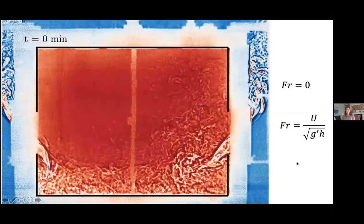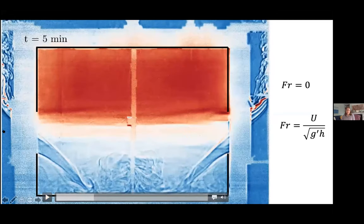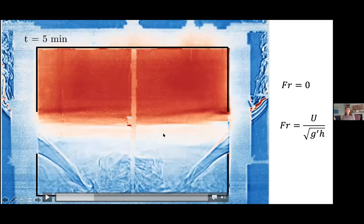First, let's see what happens when you just have a temperature difference between the inside and outside of the room. The video is a bit choppy, but you can see cool fluid flowing in through the bottom of the window and out through the top. It's very stratified — there's a layer of dyed fluid that remains inside the model room, and that's still warm, due to stratification: warm air wants to sit at the top. This is a Froude number of zero because the wind speed is zero.